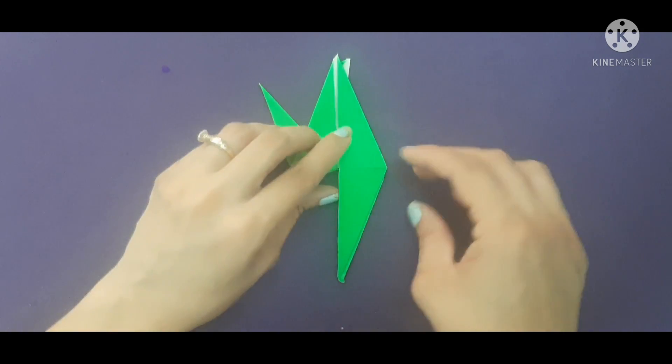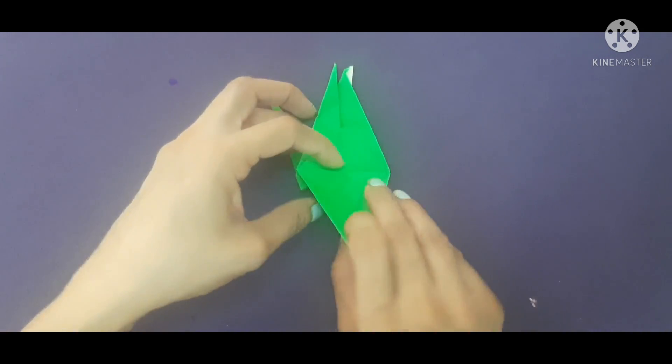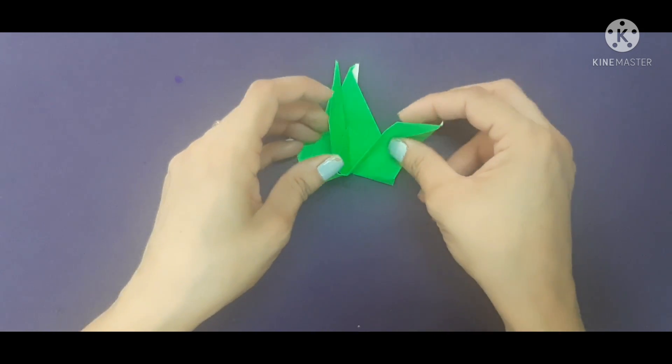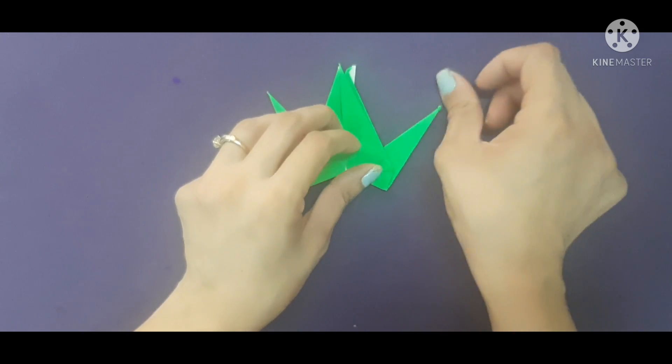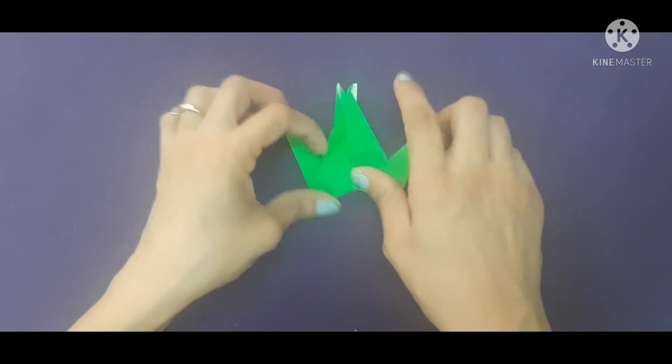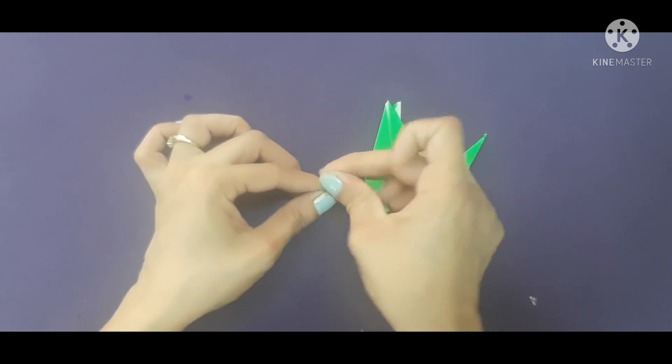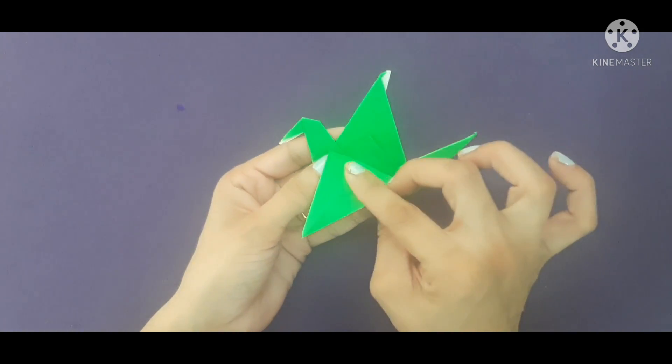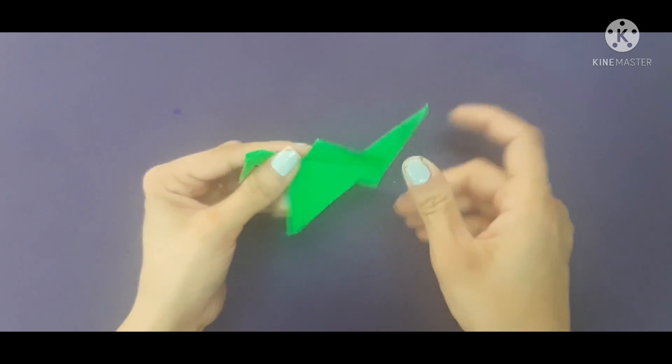This is the face part. And again, we will do like this. And we will make the tail out of this. Like this. For face, you will pull out the paper like this. And feather, the wings you will make like this.